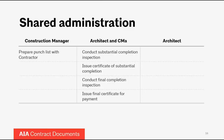The CM is the first person to work with the contractor or contractors to prepare the punch list. Inspections with respect to substantial completion and final completion are jointly done with the architect and the CM as advisor.